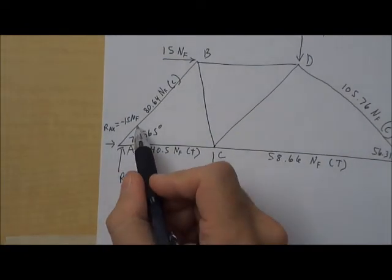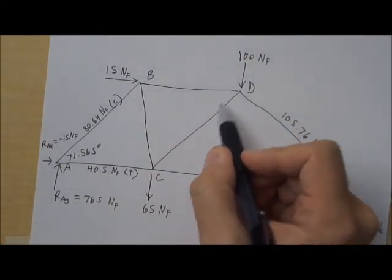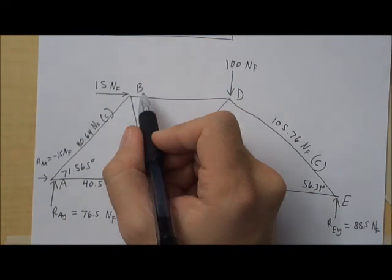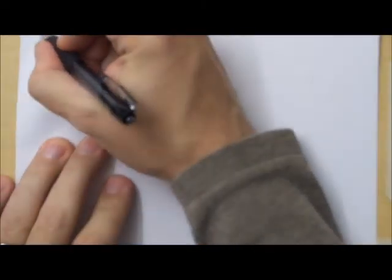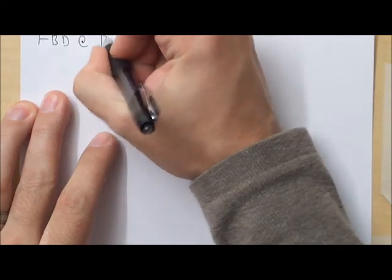At this point I've done the easier ones that only have two members and all the others have three or more members. So it doesn't really matter. I'm just going to go to B next. So label my work FBD at B.